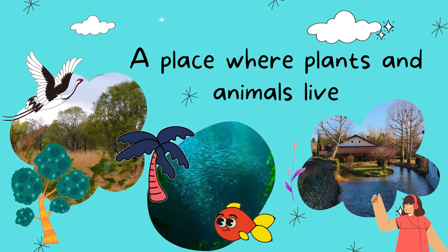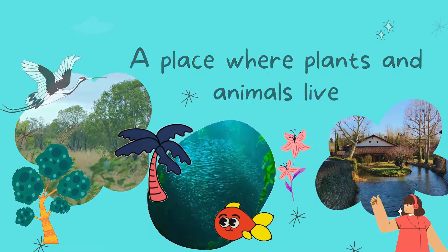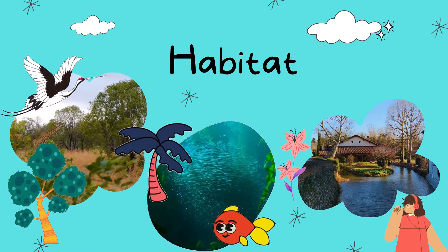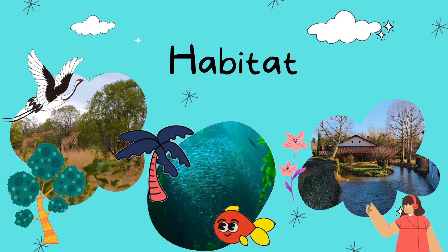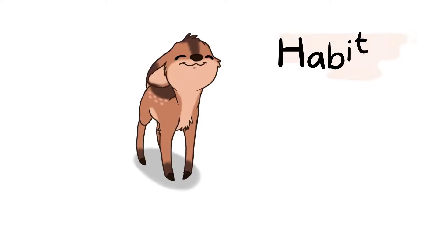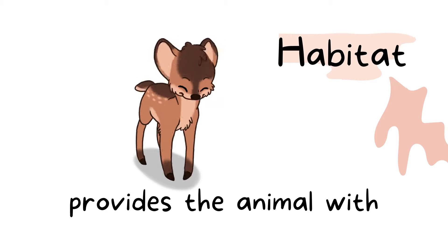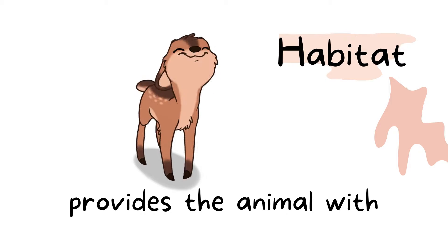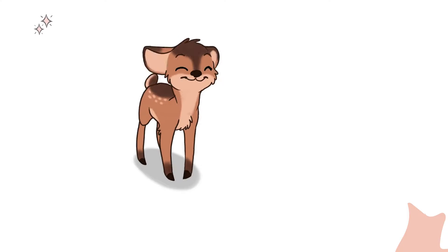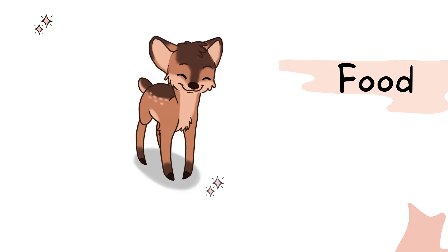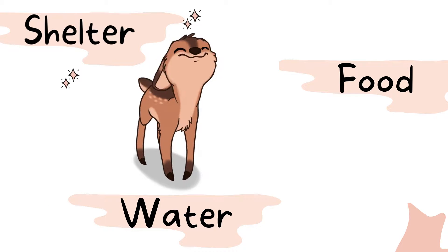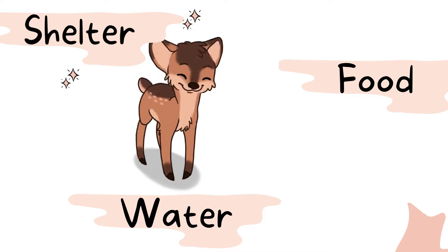A place where plants and animals live is called a habitat. These places give the animals and plants what they need to stay alive — food, water, and shelter. So a habitat provides animals and plants with the things they need to stay alive.